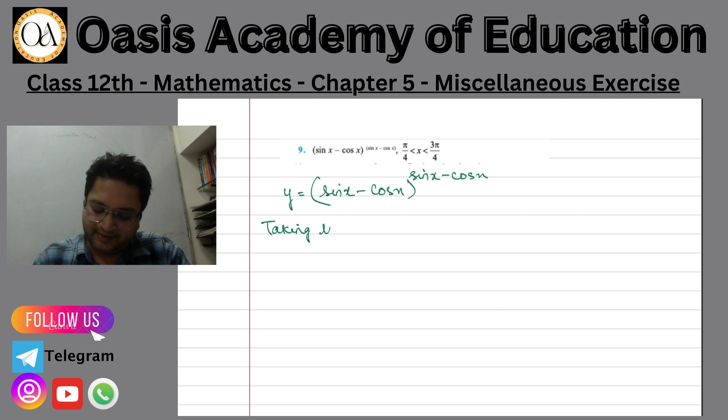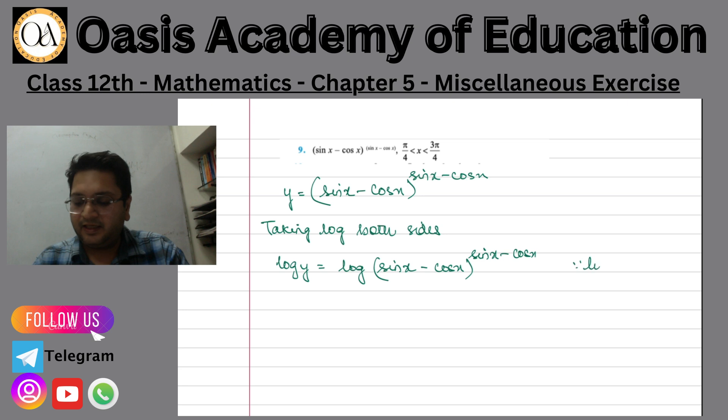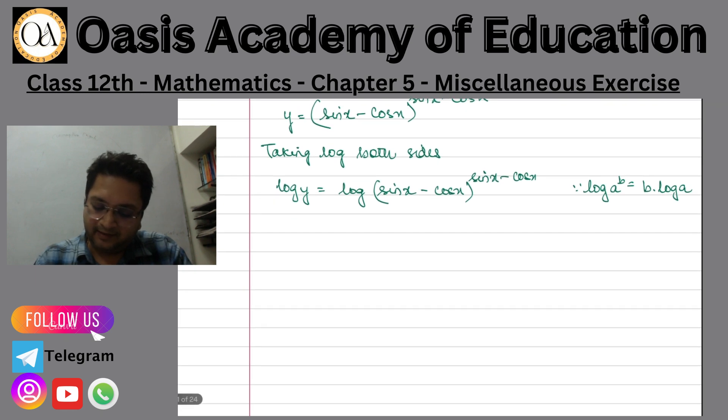Taking log both sides. So we are going to get log y equals log of sin x minus cos x to the power sin x minus cos x. Now you already know that log a to the power b is equal to b log a. So if you see here, what have I done? Log y is equal to sin x minus cos x into log sin x minus cos x.